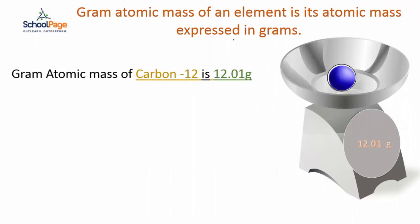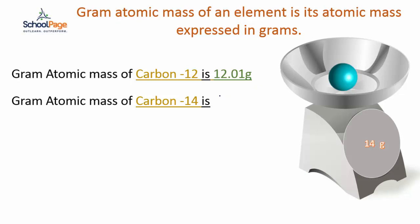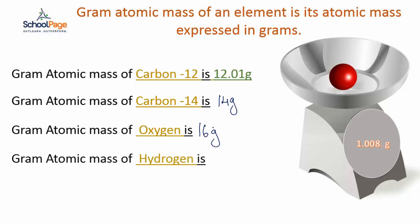In the same way, the gram atomic mass of carbon 14 is 14 grams and that of oxygen is 16 grams and hydrogen is 1.008 grams.